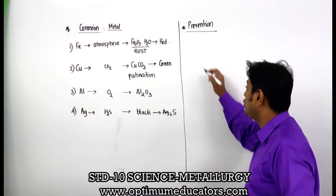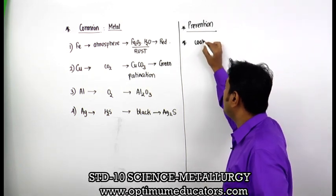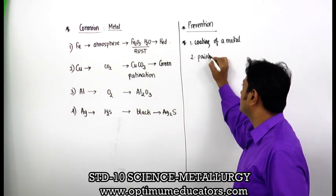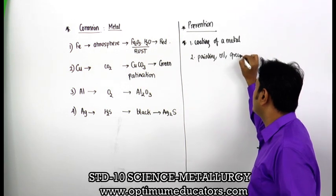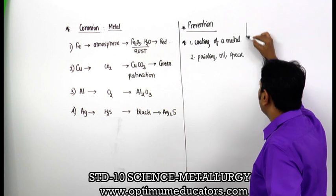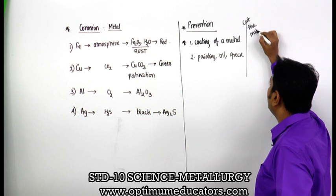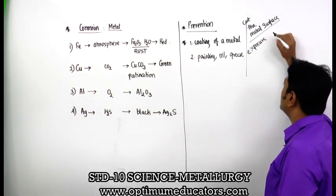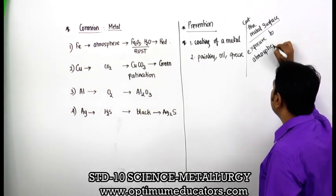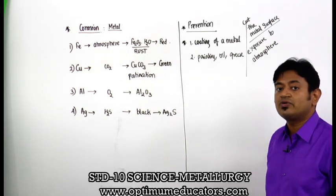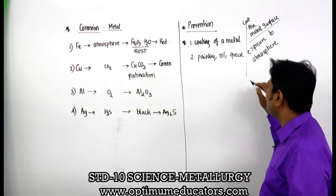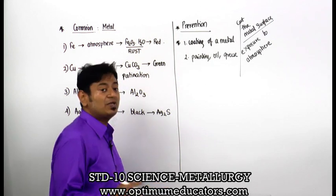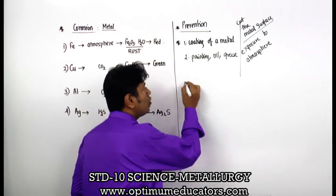Prevention of corrosion: First, ordinary methods include coating a metal, painting, applying oil or grease - all these cut the metal surface from exposure to the atmosphere. If not exposed to atmosphere, it will not corrode. However, this is not always effective because collisions or abrasion can remove the coating or paint. So we need better concrete methods.